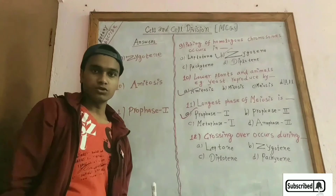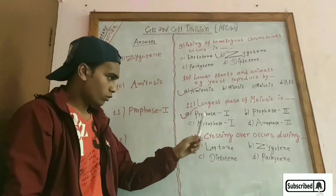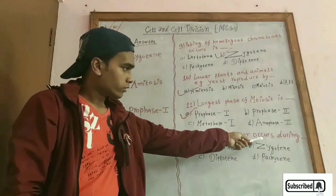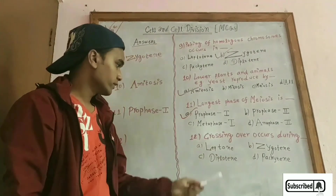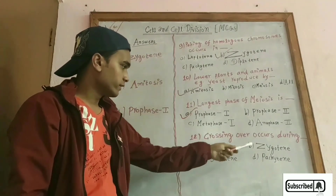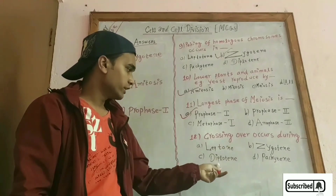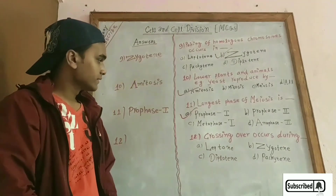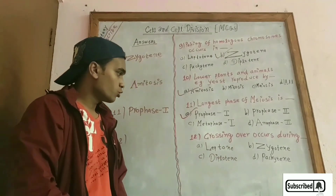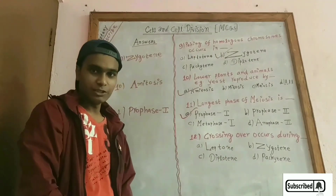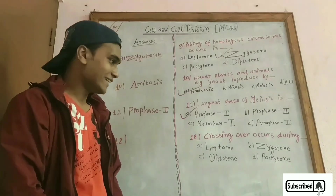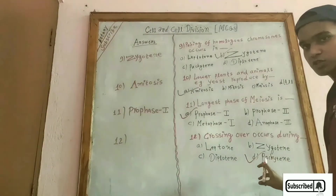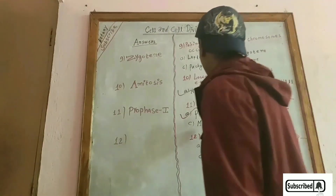The last question here: crossing over occurs during leptotene, zygotene, diplotene, or pachytene? Crossing over takes place during pachytene of prophase 1.